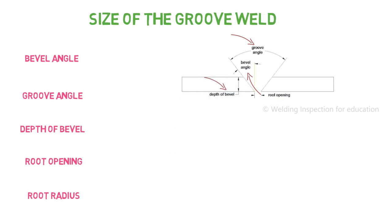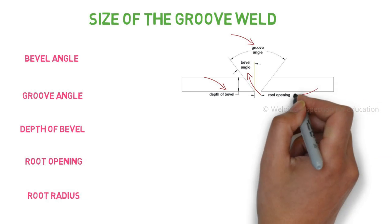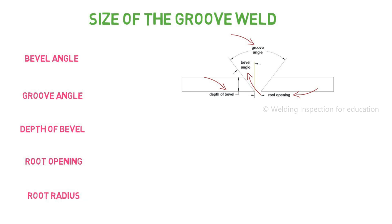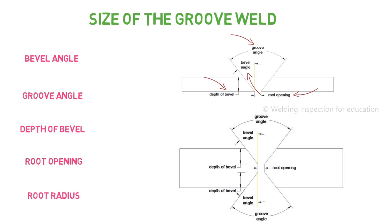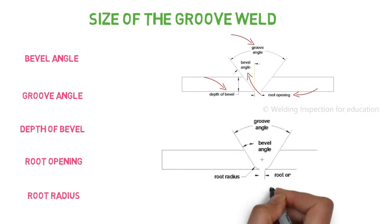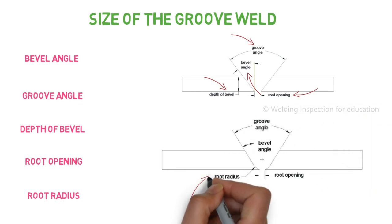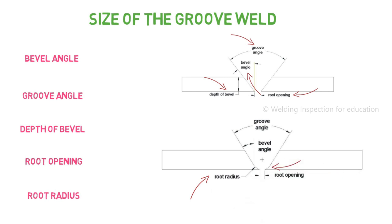Depth of bevel is the preparation or thickness of parent metal or a single metal for the welding application. Root opening is the distance between two metals prepared for the welding. Here you can see one more example of the same features, but for a double V groove joint. For this connection, you can also see the root radius. It is not common in the welding industry, but mostly for machining components. Root radius is given for better landing of the electrode to get better fusion and better welding towards the root.